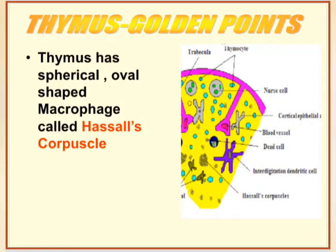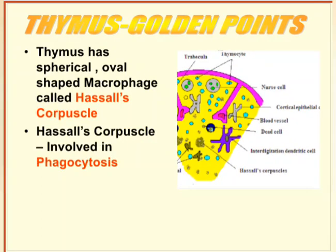As discussed in the structure of thymus, the medulla region contains spherical, oval-shaped macrophages called Hassall's corpuscles. Hassall's corpuscle is a macrophage — 'macro' means large size, 'phage' means engulfing. This macrophage engulfs pathogens and is oval and spherical in shape. Hassall's corpuscles are involved in the function of phagocytosis, meaning they engulf pathogens, thereby protecting our body.